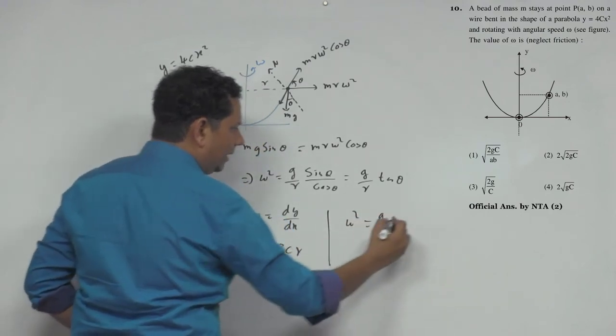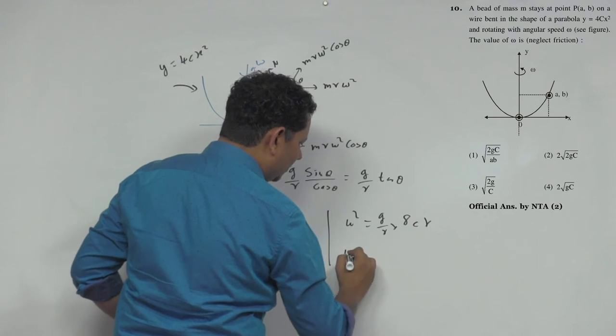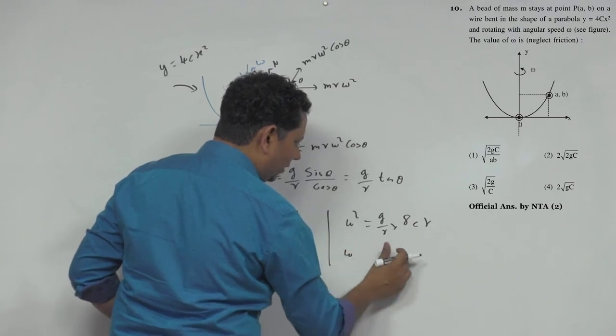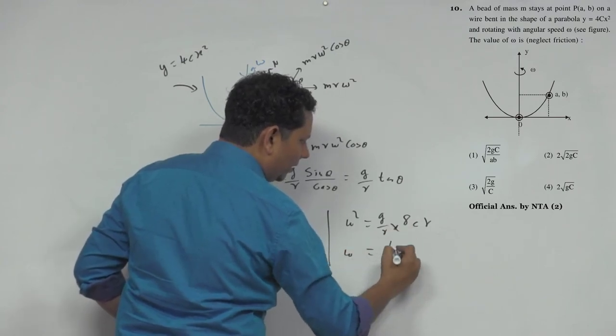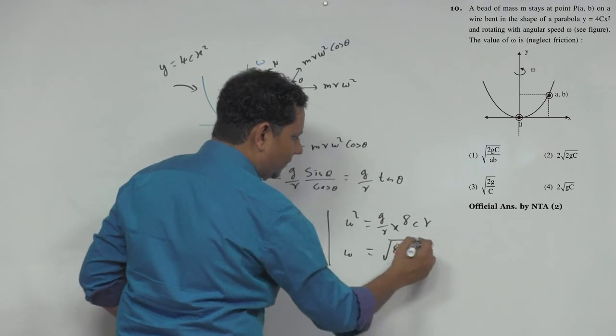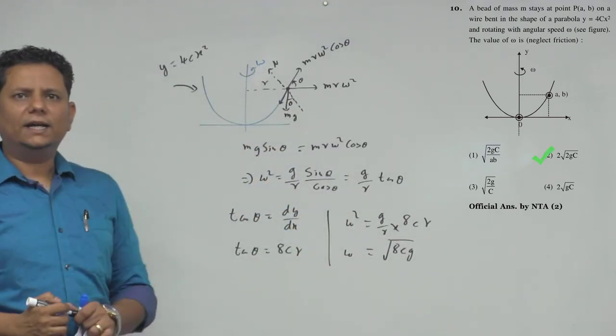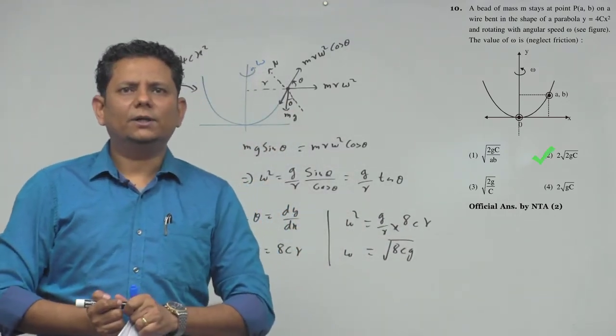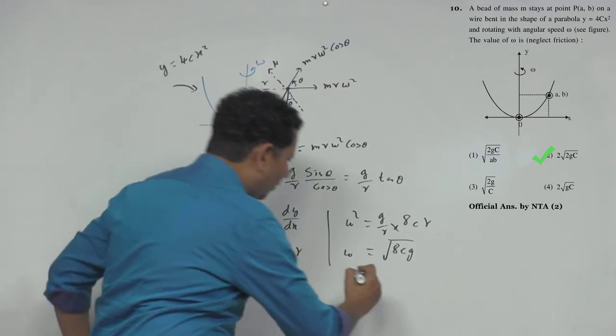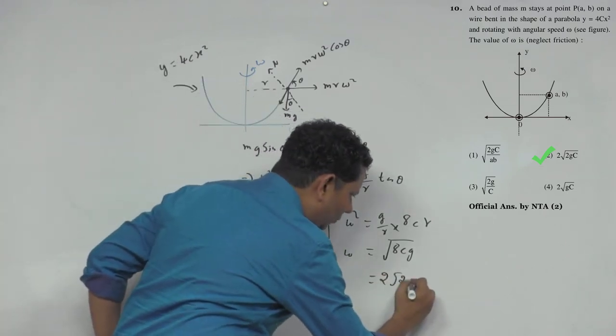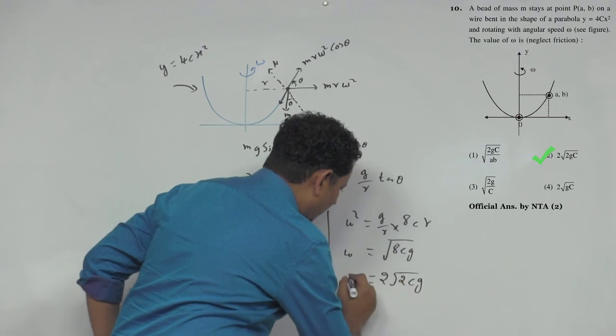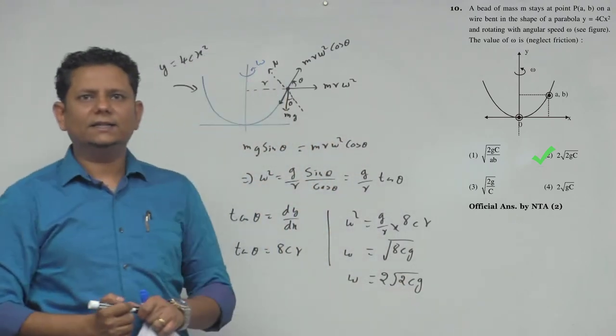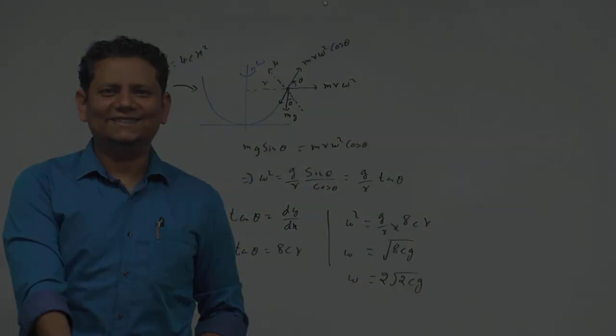Insert this value: ω² = (g/r) × 8cr = 8cg. Therefore, ω = √(8cg), which is the final value. This can be written as 2√(2cg). So option 2 is the right answer.